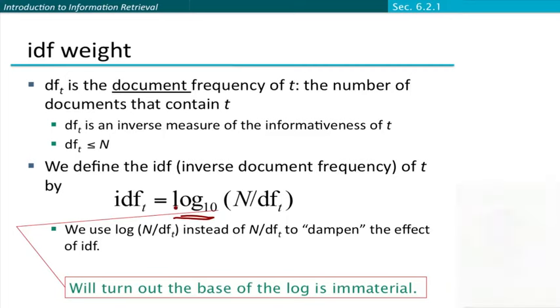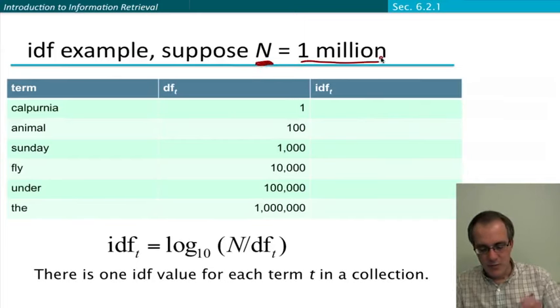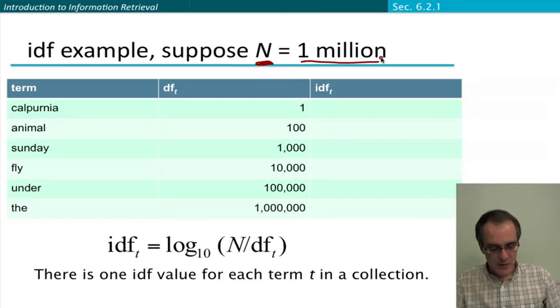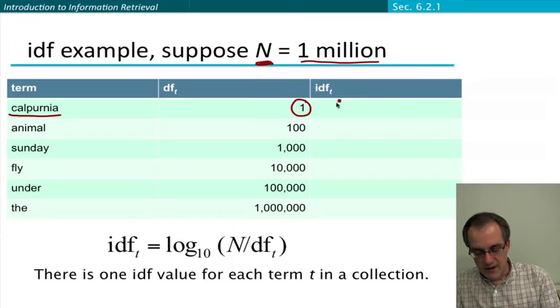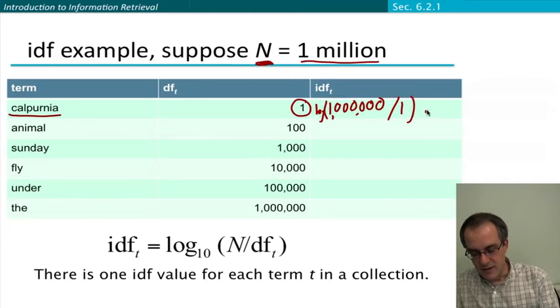Okay, let's go through a concrete example, where again we're going to suppose that the size of our document collection is one million documents. So if we take an extremely rare word like calpurnia, which let's say occurs in just one document, then what we're going to be doing is we're going to be taking one million, the number of documents, divided by one, and then taking the log of that, which means with log to the base ten, that will be six.